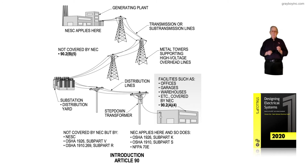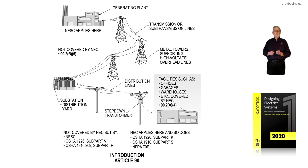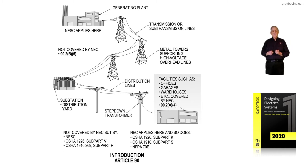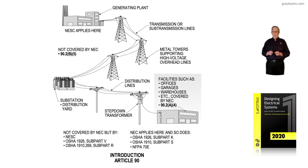The supply side is not covered by the NEC but by three standards. First, the National Electrical Safety Code covers the supply voltage. During construction of the generating plant, towers, transmission lines, substation, and distribution lines using utility poles, OSHA 1926 subpart V applies. Once construction has been accepted by the utility, OSHA 1910.269 subpart R applies. Those are the three main standards for the supply side.